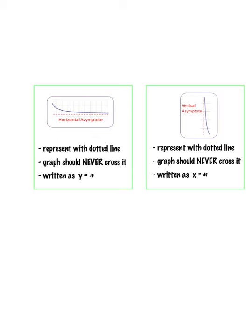They're written as y equals or x equals. The graph should never cross those lines — that's the idea of being an asymptote. We use a dotted line to represent it, which separates it from the solid line that's the actual graph.